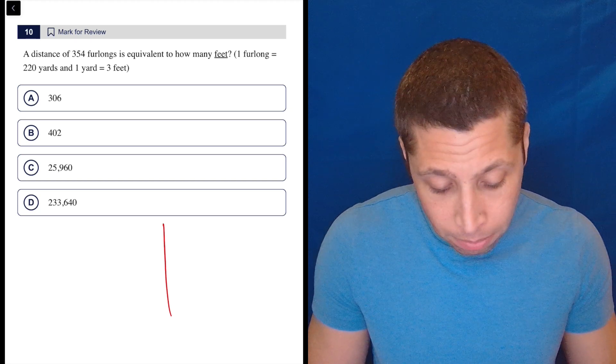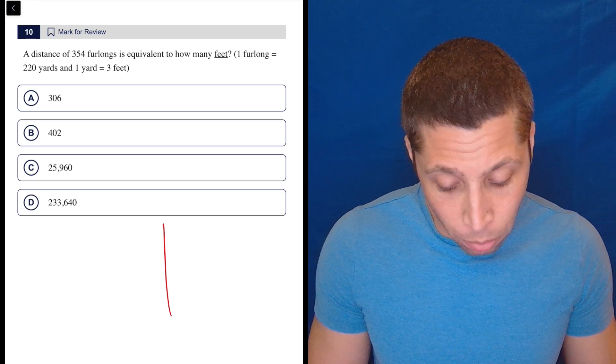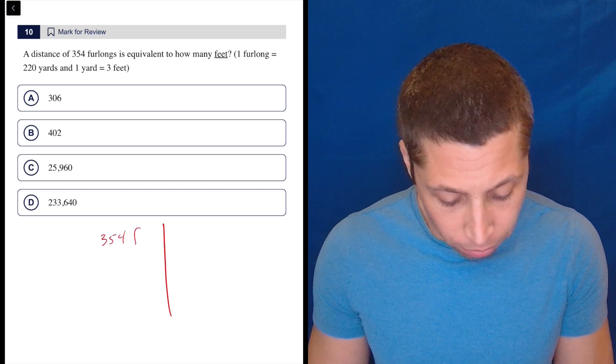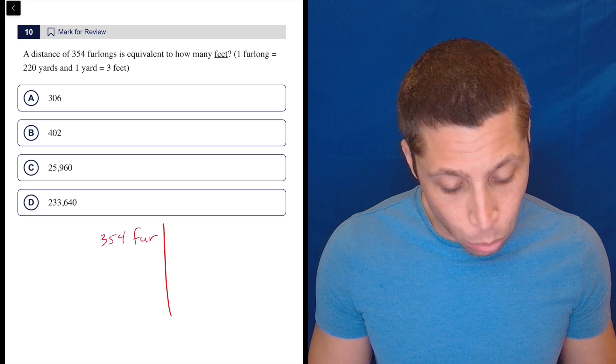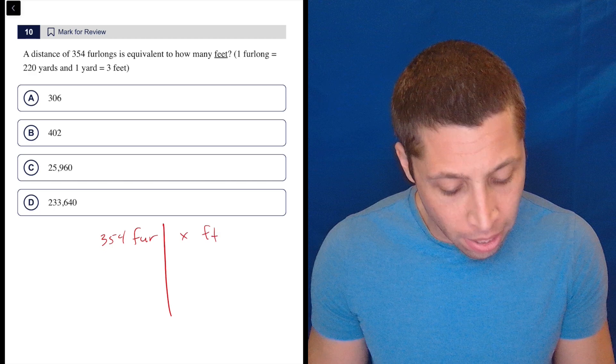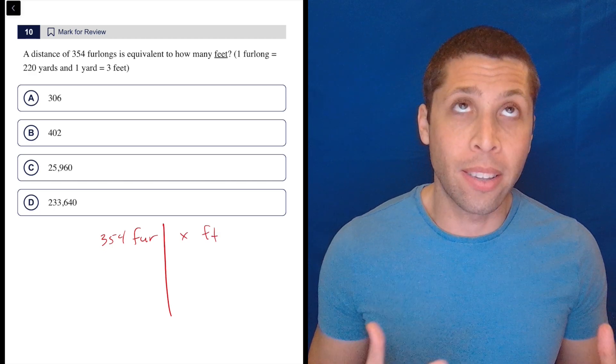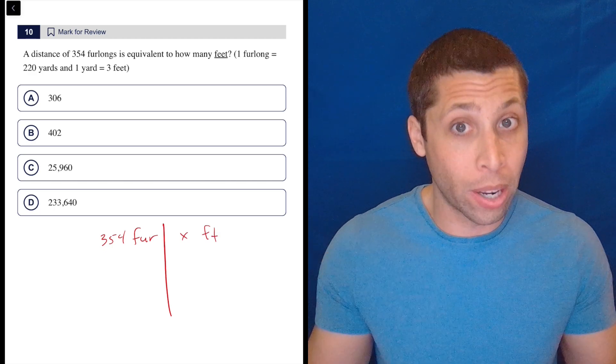And it just involves finding some rates and going with it. So a distance of 354 furlongs is equivalent to how many feet? So that's X feet. So you want to put a unit on each side. And so in this case, this rate is kind of like the question itself.